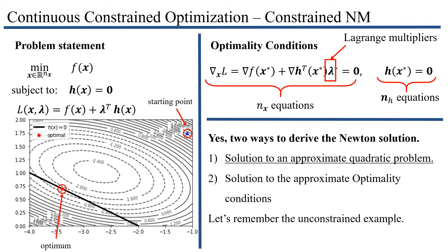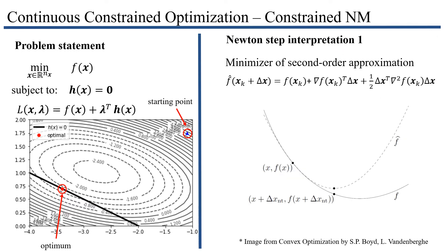First we'll talk about how we can solve this by an approximate quadratic problem. In the unconstrained case, what we would do is at every point take a quadratic approximation — a second-order Taylor approximation of the objective function — and solve this with respect to delta x to find the optimal step size for this quadratic approximation. This led to the figure from convex optimization where you approximate the problem at every point and solve it, and that's how you get the Newton step.